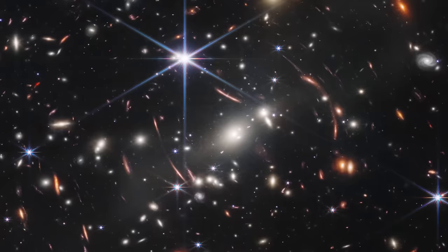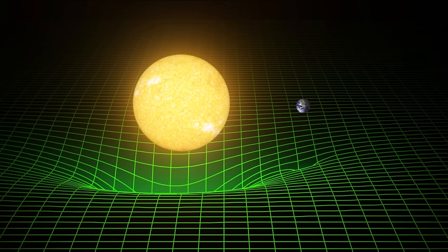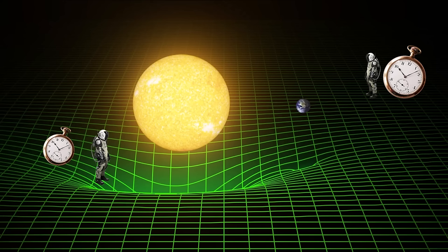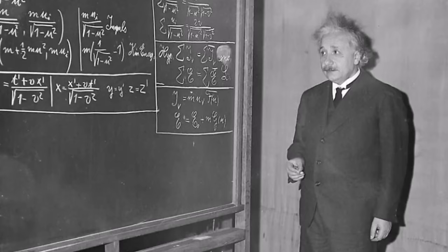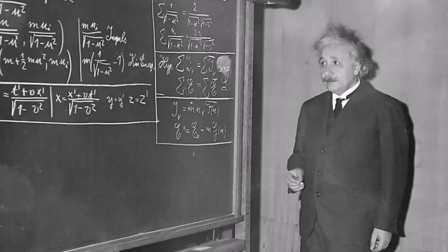Now let's consider warped time. When near a massive object, time behaves differently due to gravity. Imagine two astronauts, George and Gracie, with synchronized clocks. If George lowers himself toward the Sun on a cable, his clock will run slower than Gracie's because of the stronger gravitational field. Gravity not only warps space but also distorts time. This effect is more significant near denser objects, like neutron stars or black holes, where time slows down even more due to stronger gravitational fields. Einstein's ideas connect gravity, space, and time in a way that aligns with the principles of special relativity.